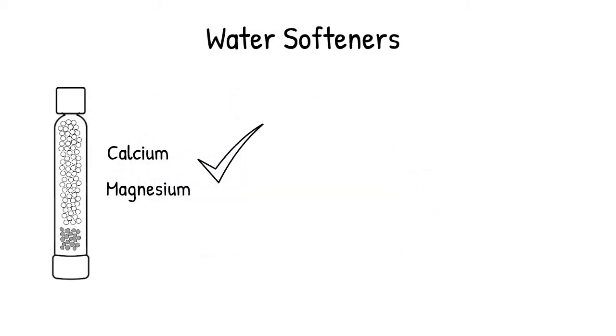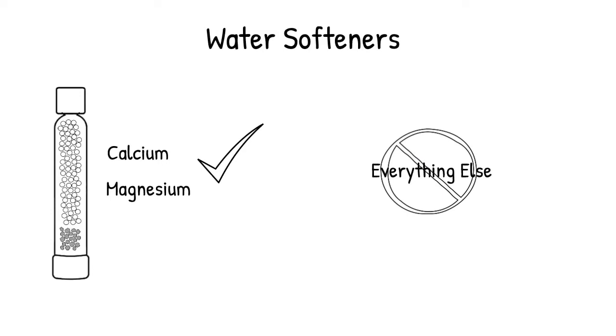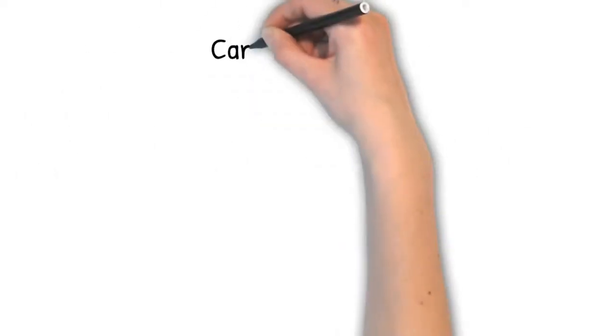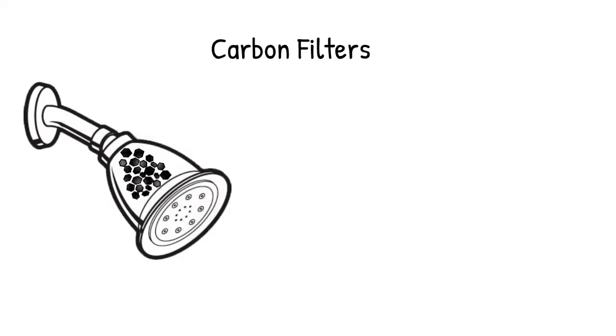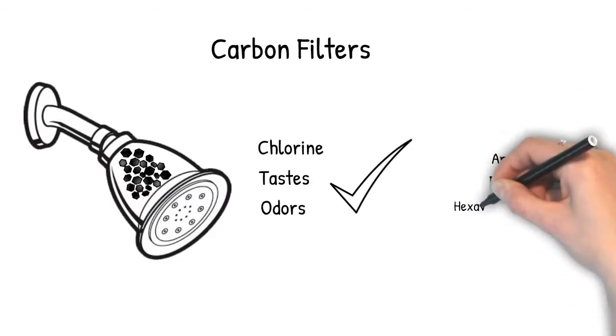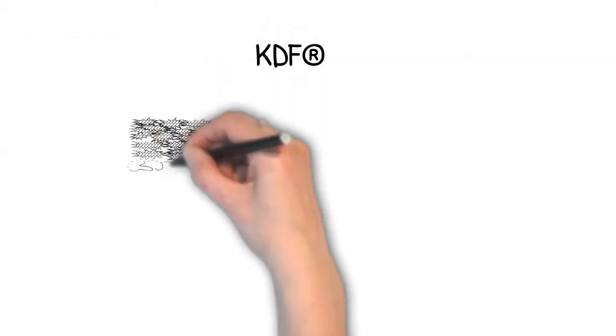However, alone they don't remove most other contaminants and create sodium as a byproduct. Carbon filters bond with and remove contaminants. However, most carbon filters are only designed to remove chlorine and improve taste and odor. They do not remove common inorganic pollutants like arsenic, fluoride, and hexavalent chromium.